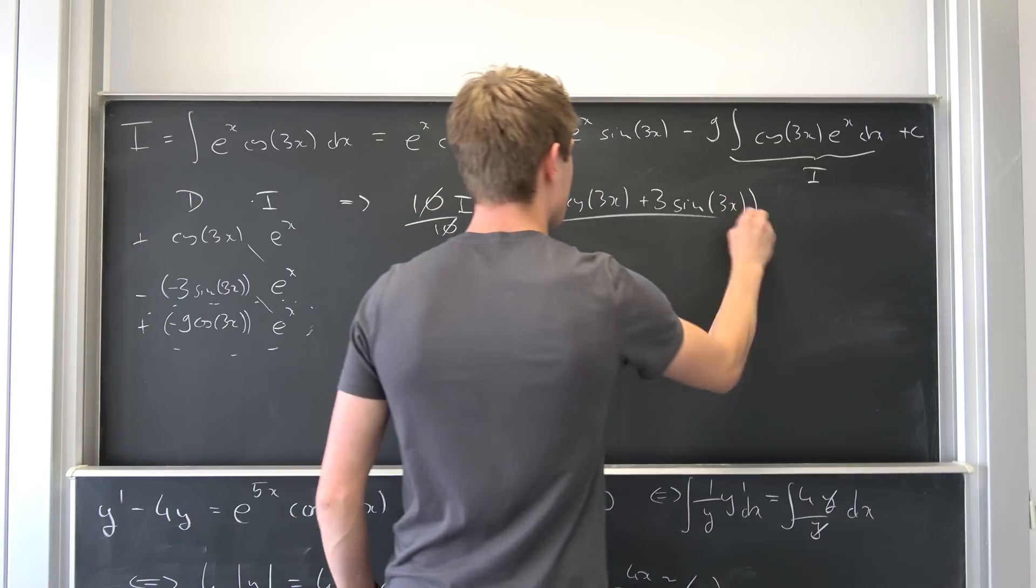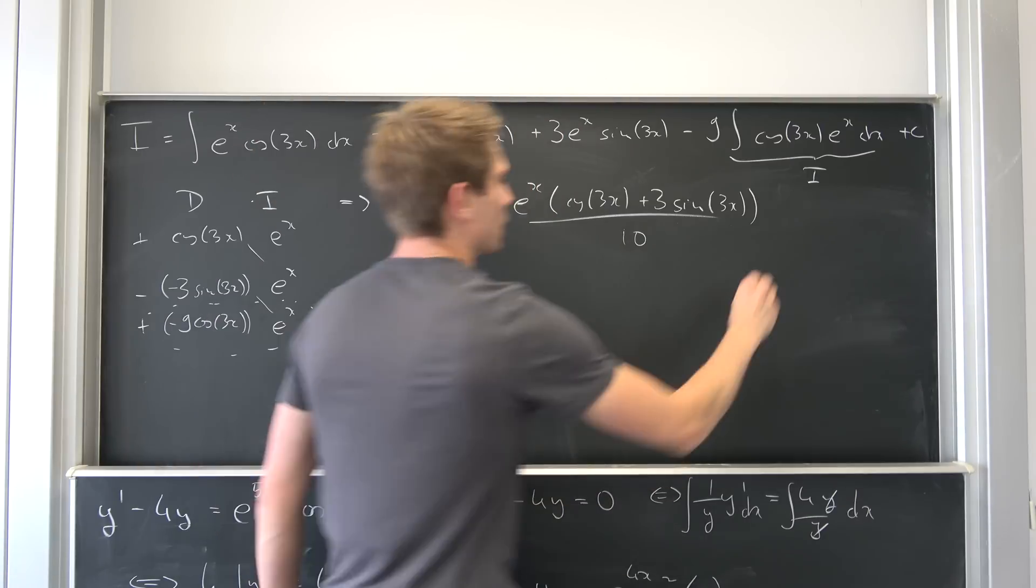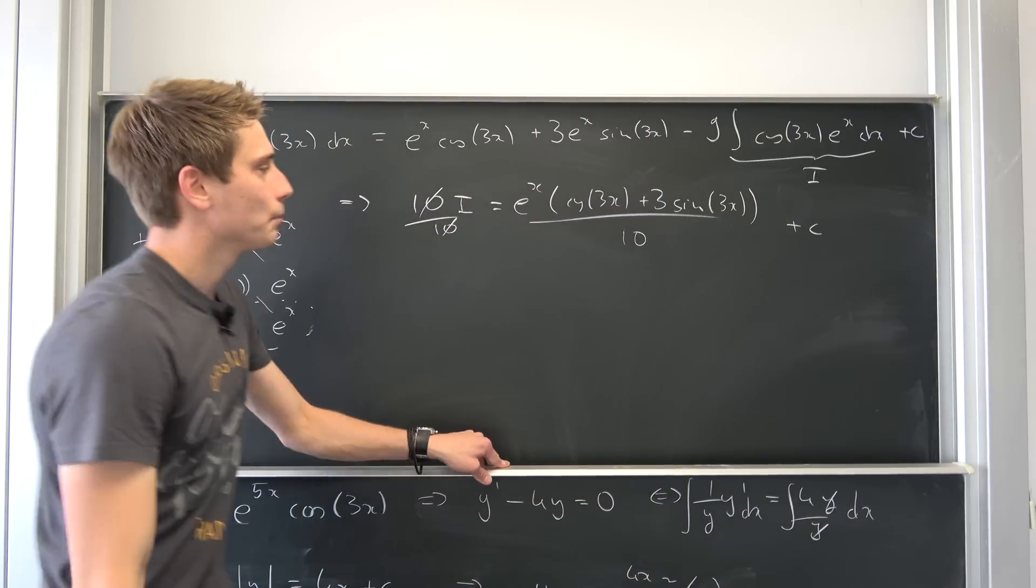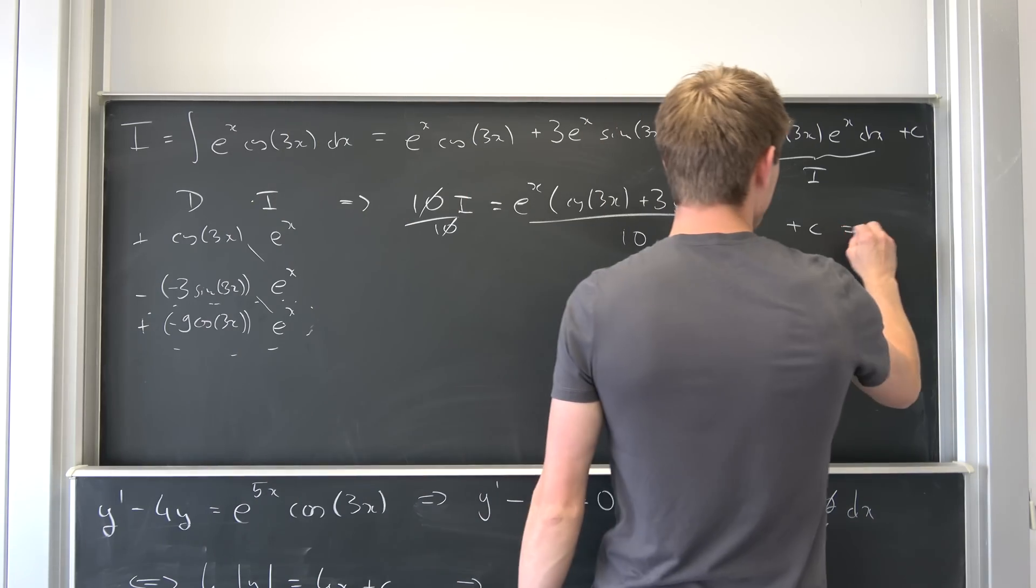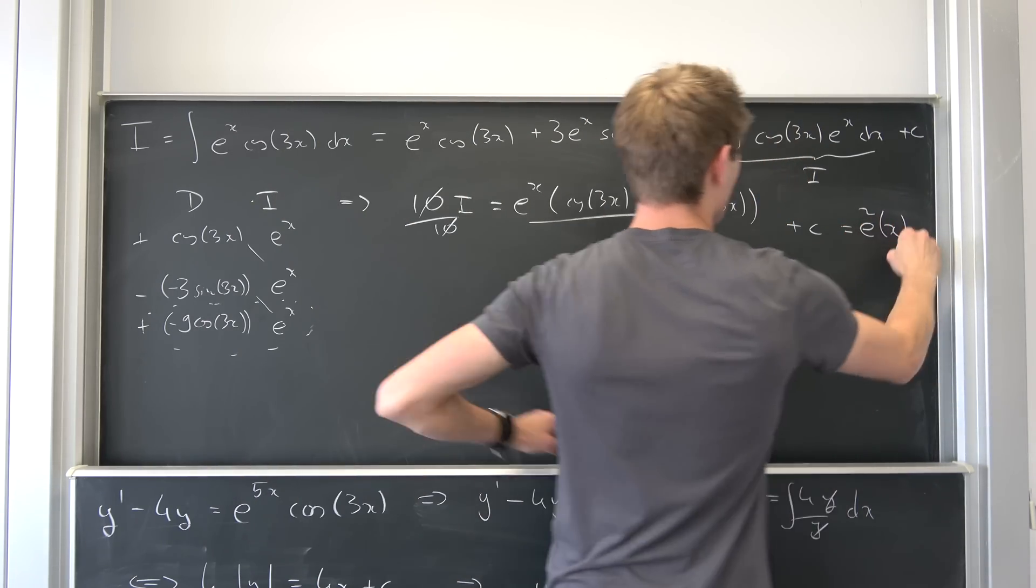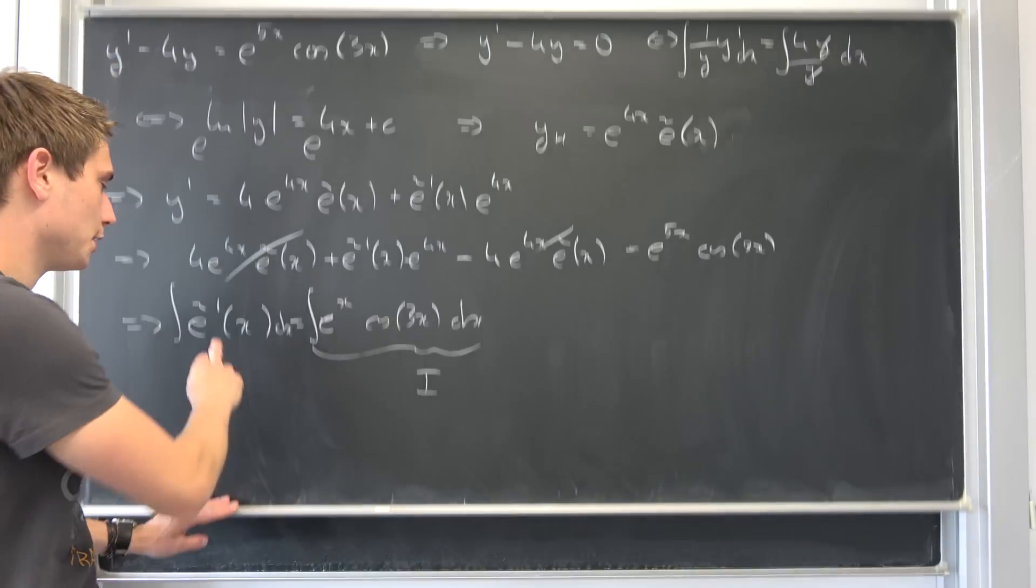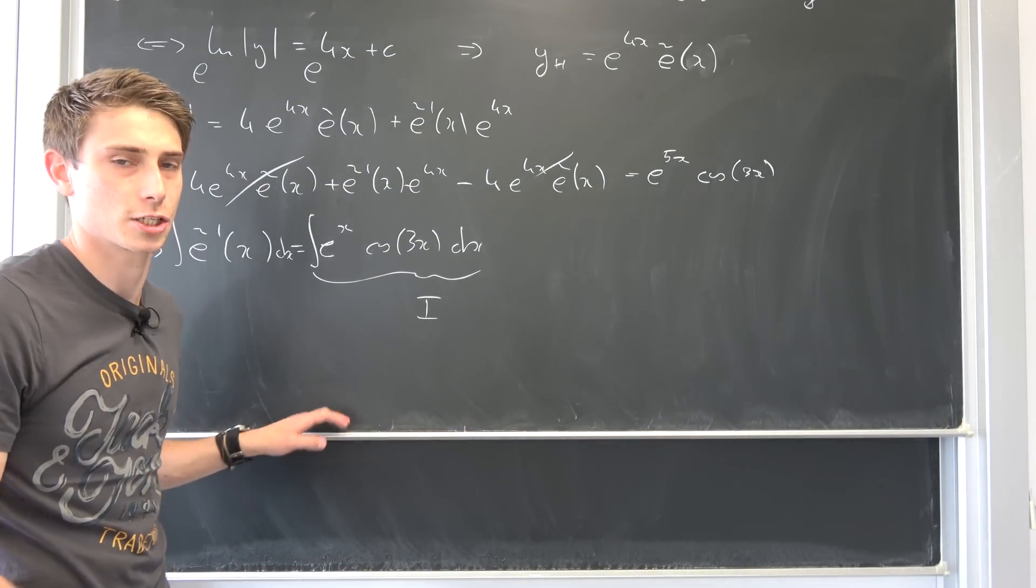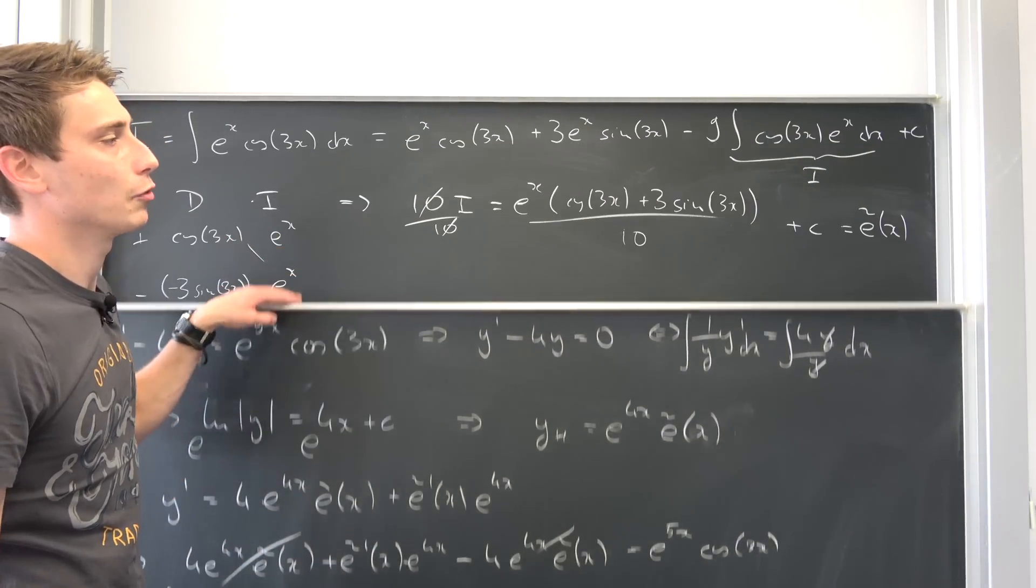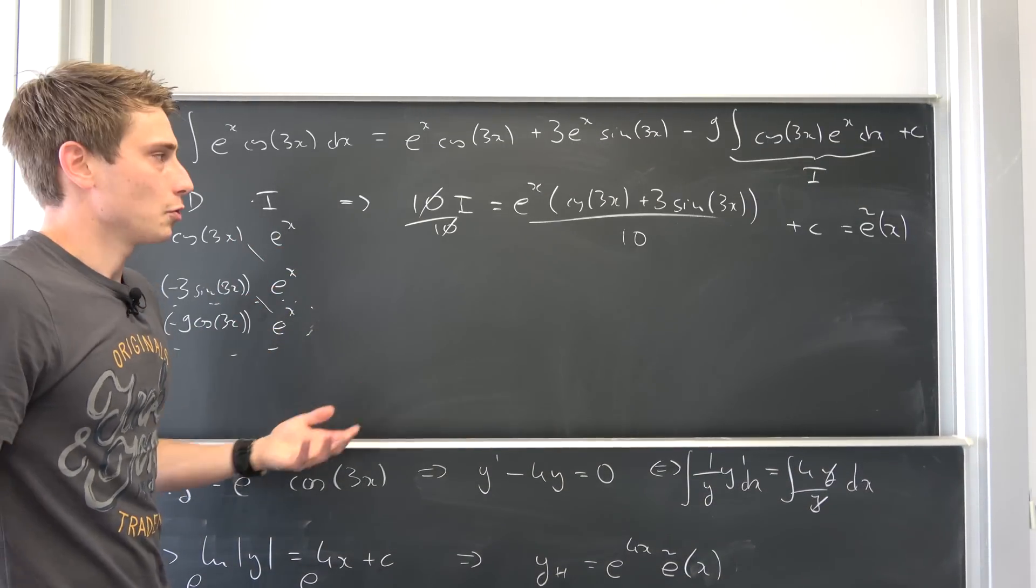Pulling off a black pen red pen once again. And don't forget your arbitrary constant c. And then you are already done and don't forget what your i is. i in fact is just our e-schlange of x because e-schlange prime of x integrated with respect to x is just going to give us e-schlange of x.